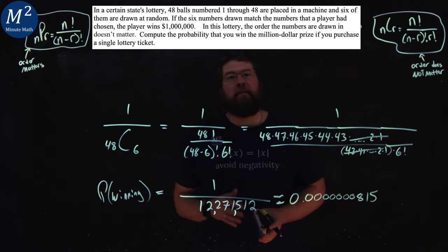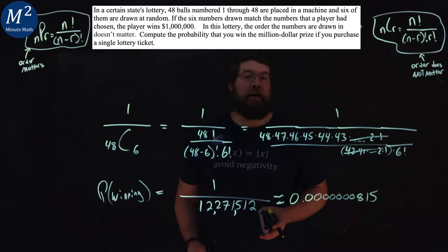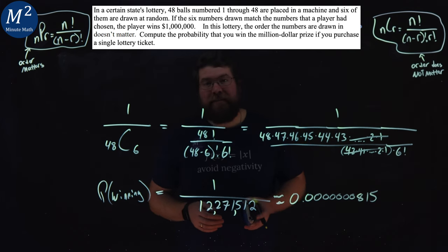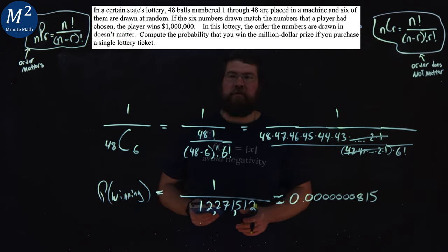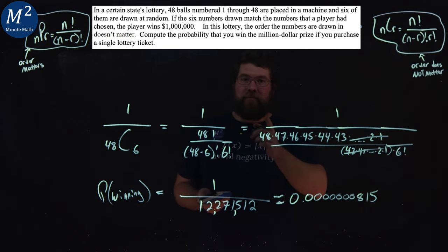So a very low probability that you get it, which makes sense. There's 12 million roughly different ways to combine this type of lottery, and you only have one ticket there. Well, I hope you learned something about probability with the lottery. And as always, thanks for watching.